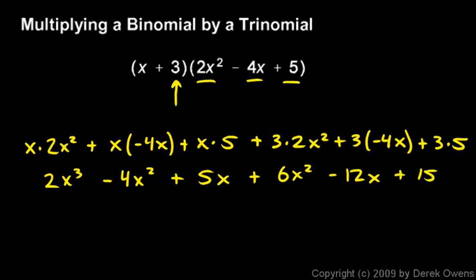The 2x cubed is all by itself, so I'll just write 2x cubed. I have a negative 4x squared and a positive 6x squared. So that gives me a positive 2x squared.